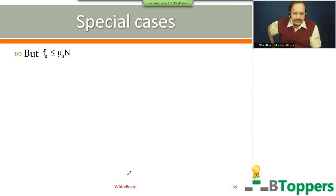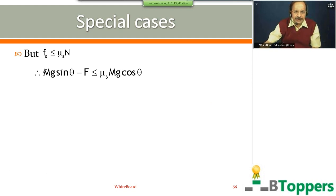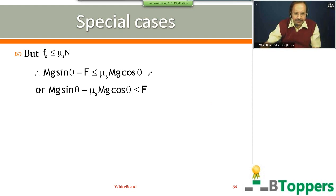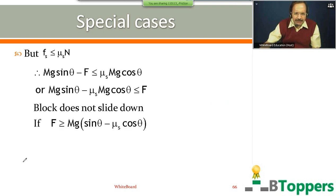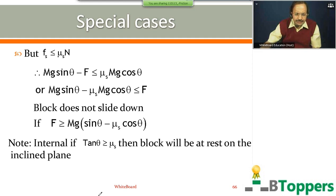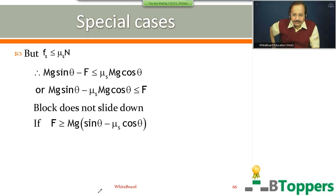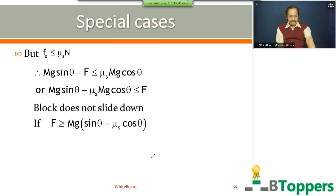But Fs is less than or equal to νs times N. Substituting Fs equal to mg sin θ minus F and N equal to mg cos θ: mg sin θ minus F is less than or equal to νs mg cos θ. Rearranging, block does not slide down if F is greater than or equal to mg(sin θ − νs cos θ).